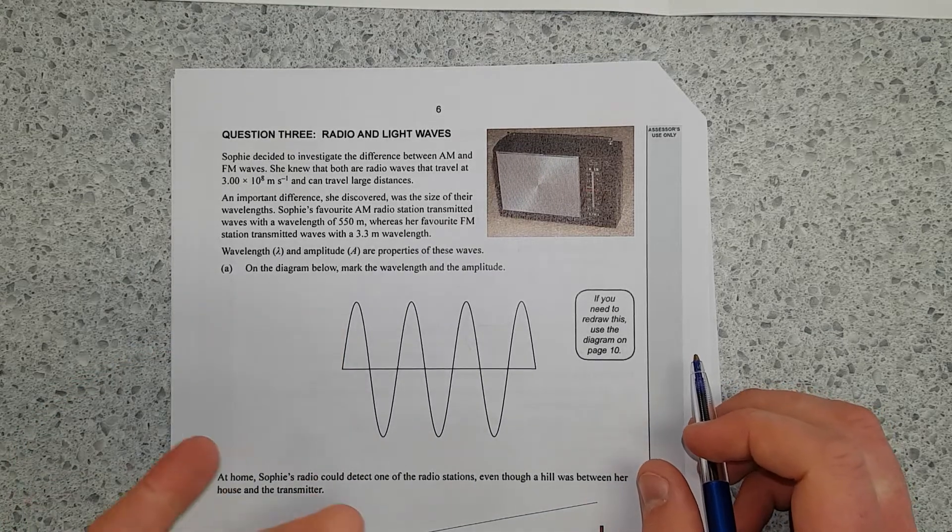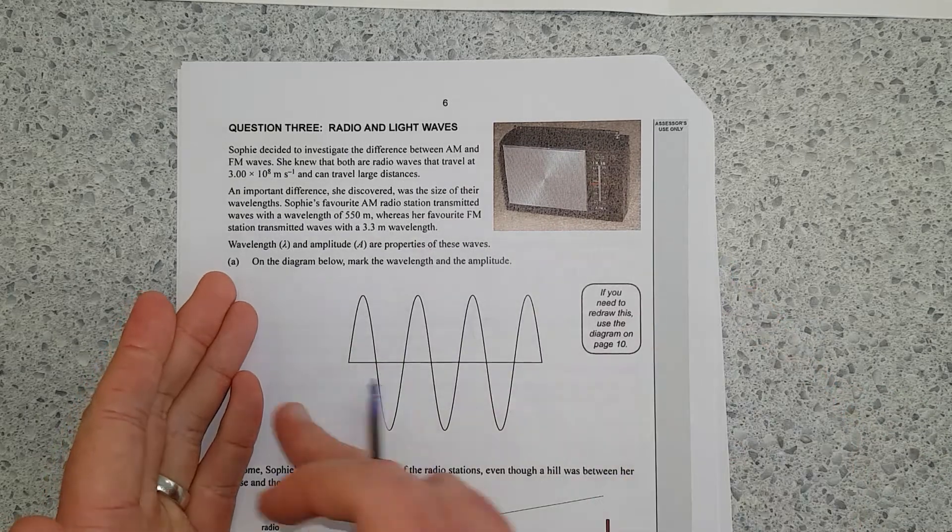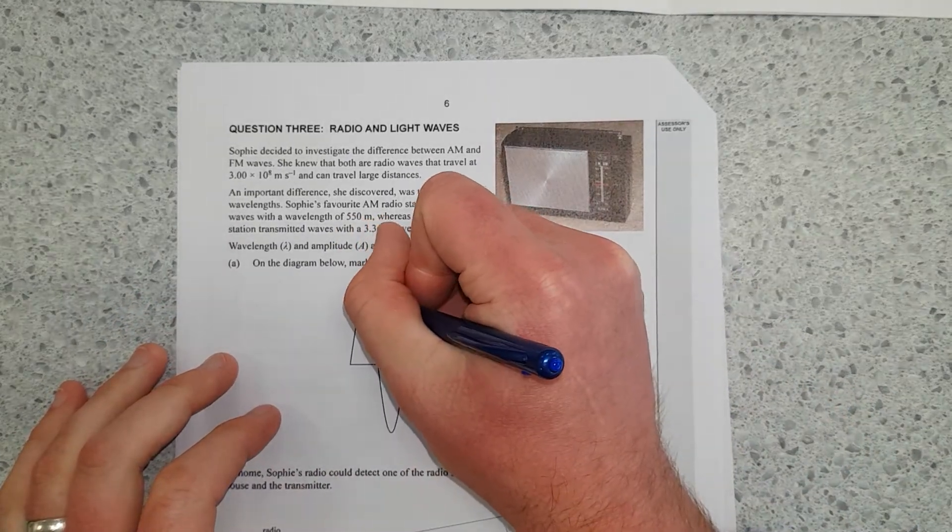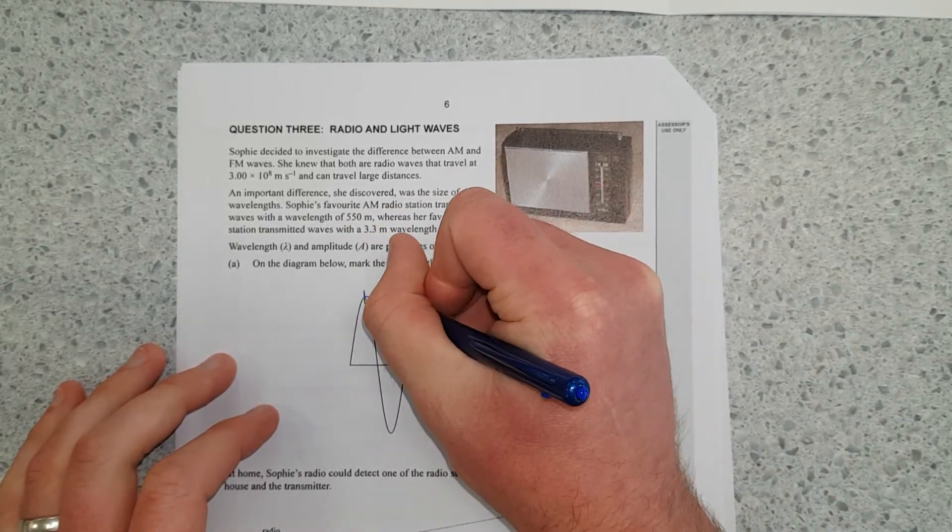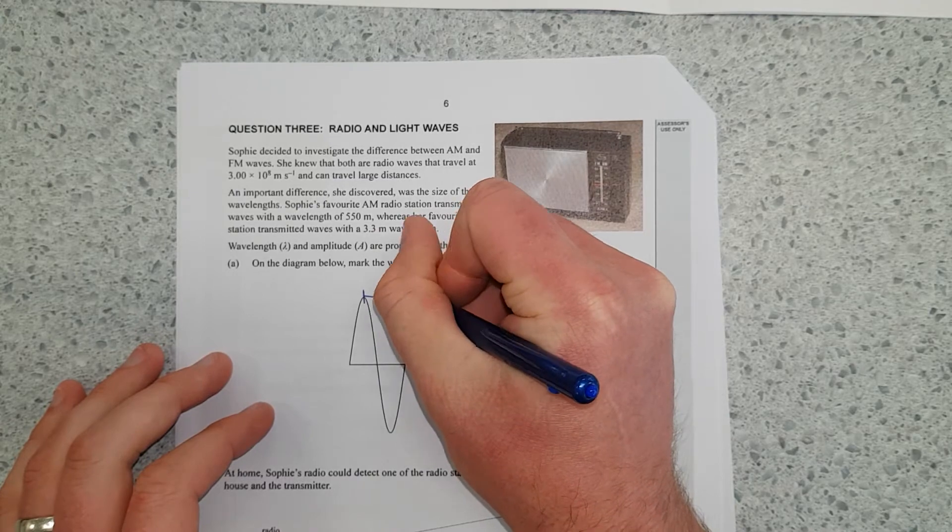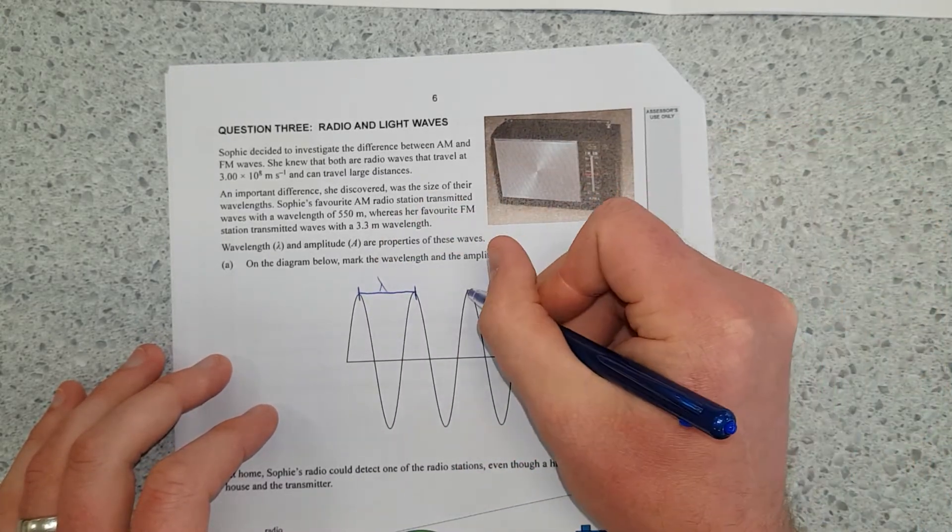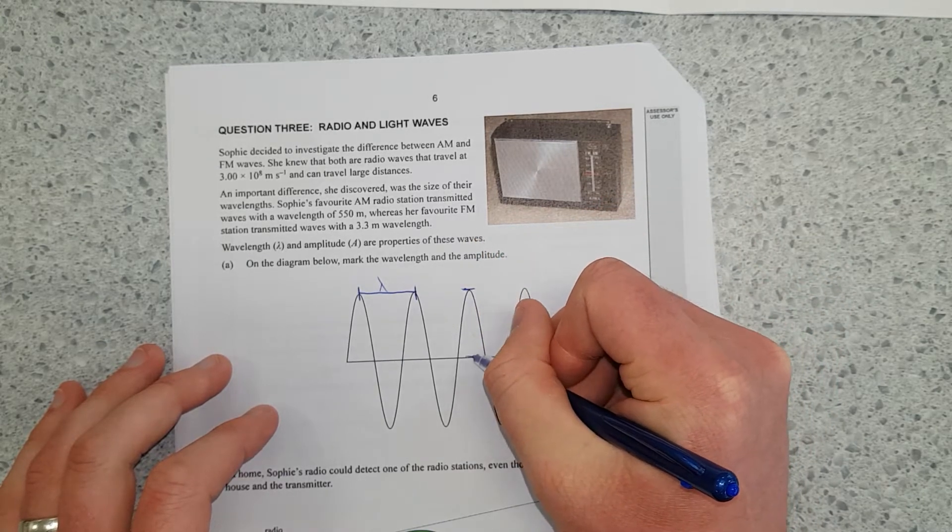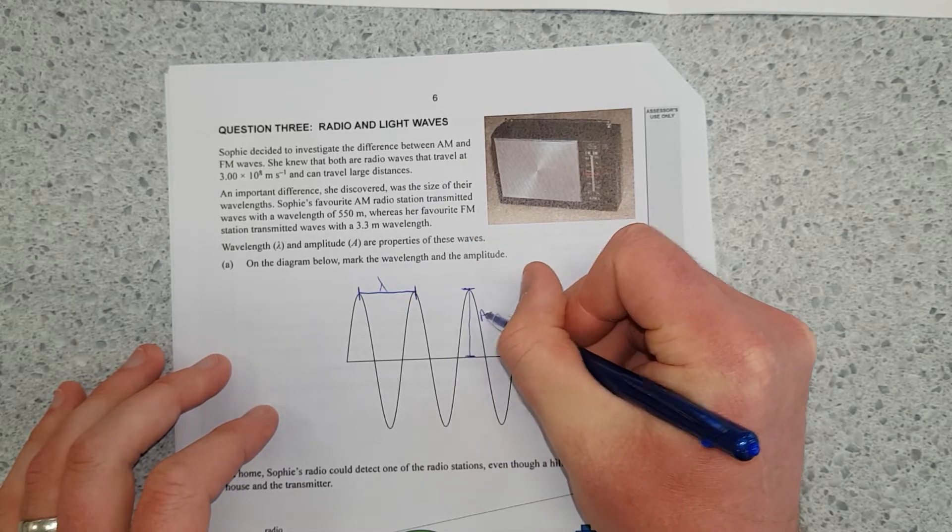So wavelength is just when the pattern repeats itself. As you can see this is a pattern, it just repeats and repeats. So where it repeats, if we start here, there's where it starts repeating. So that is one wavelength. The amplitude is the size of the wave. So I'll just mark it over here. From the equilibrium point, so from the centre up, is the amplitude.